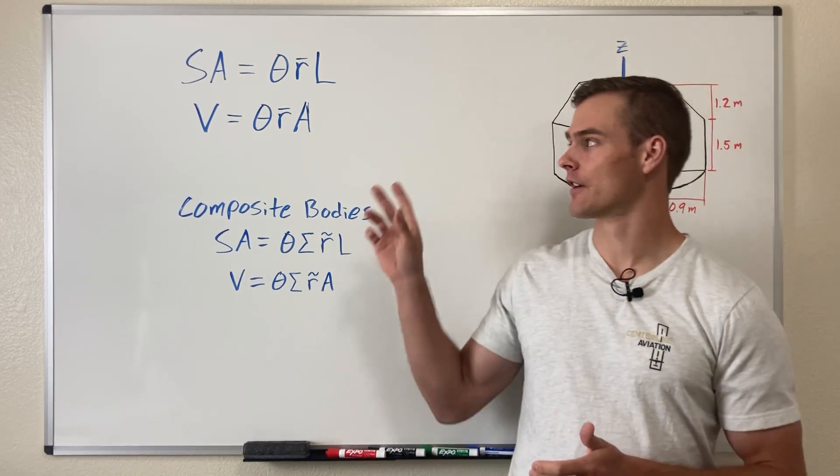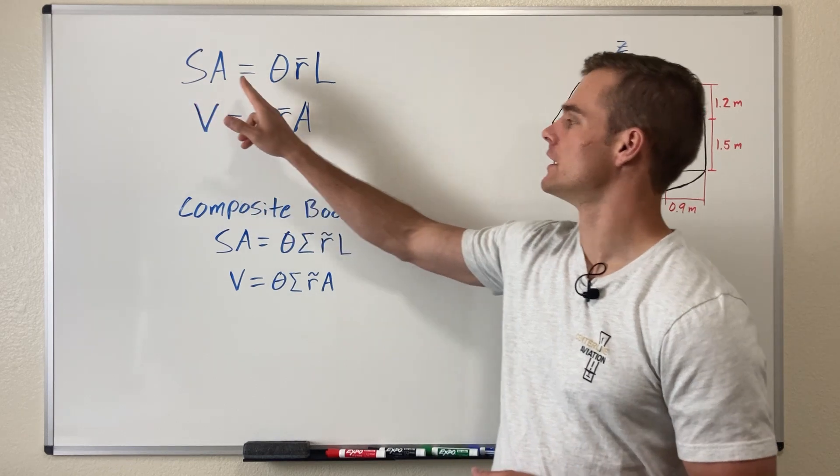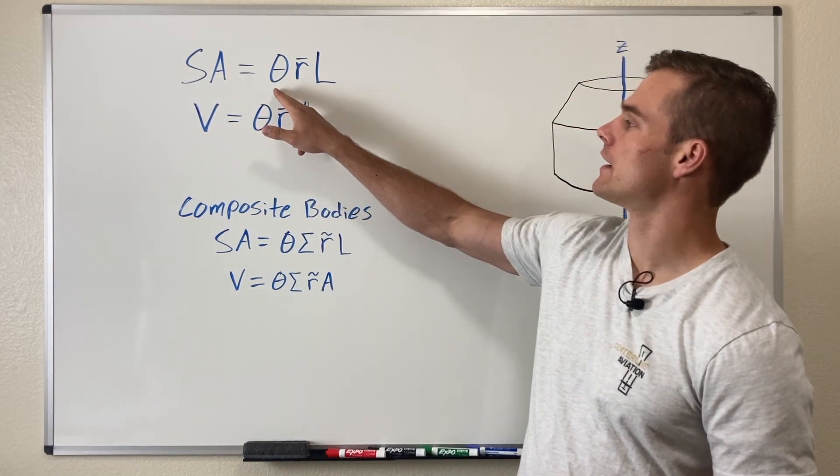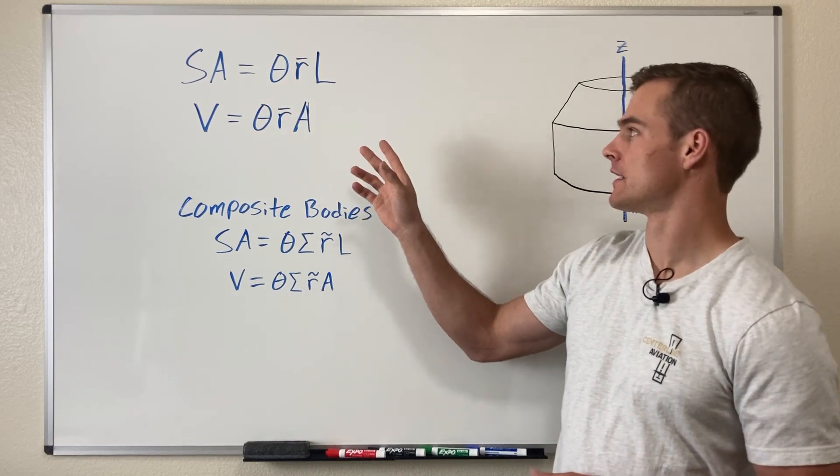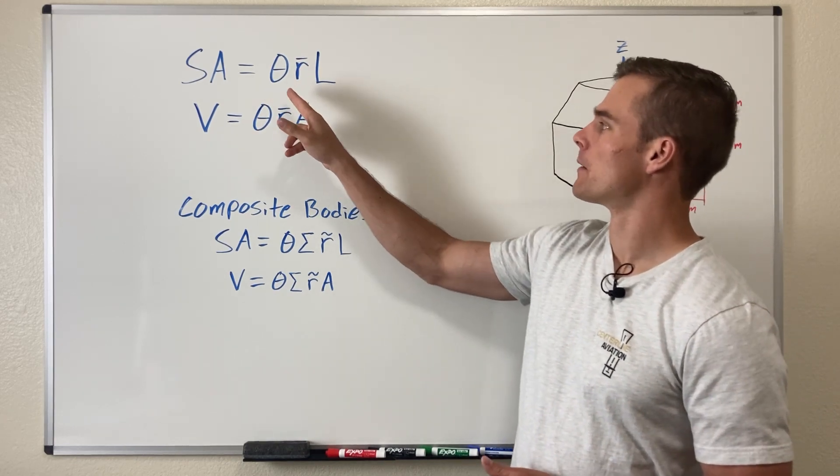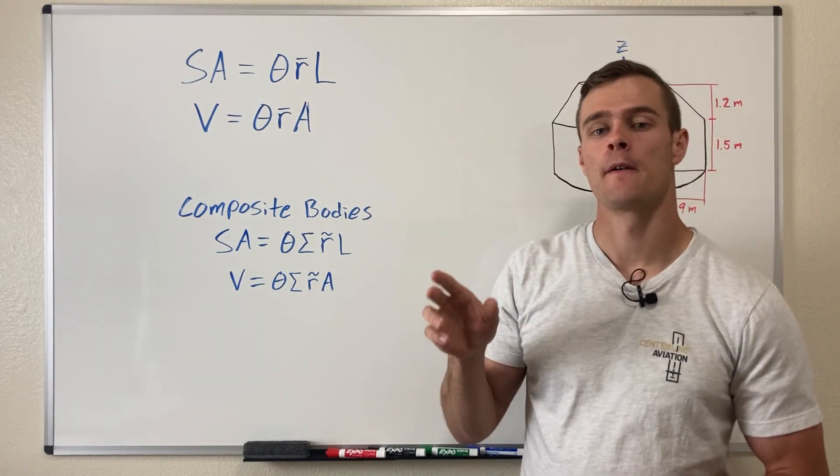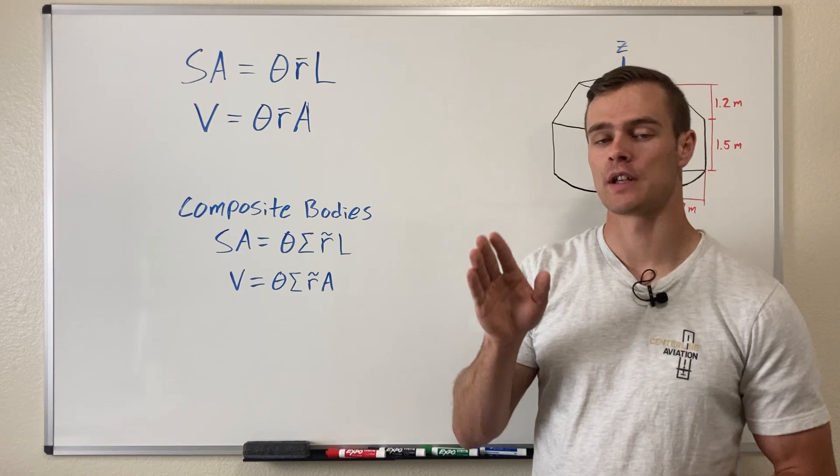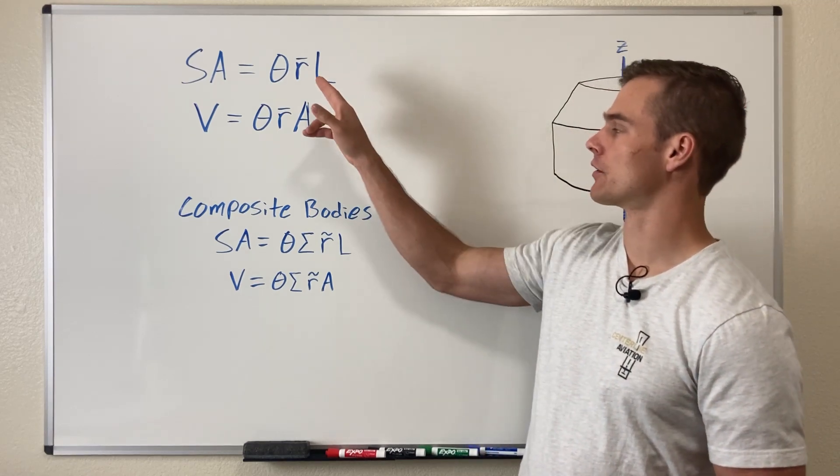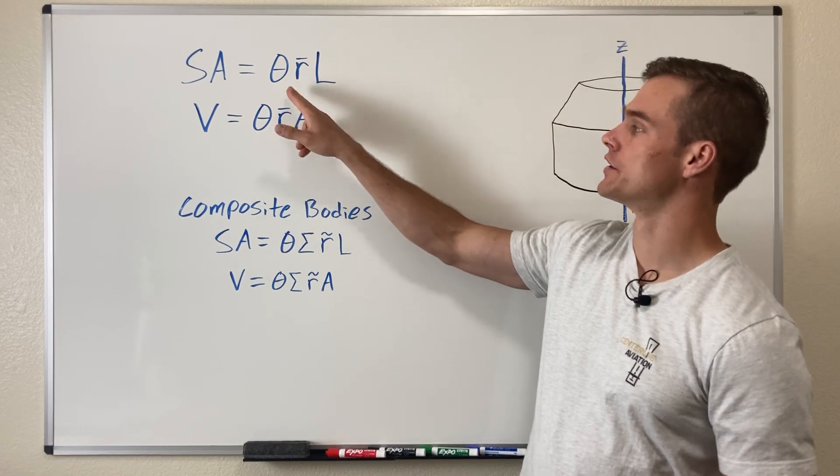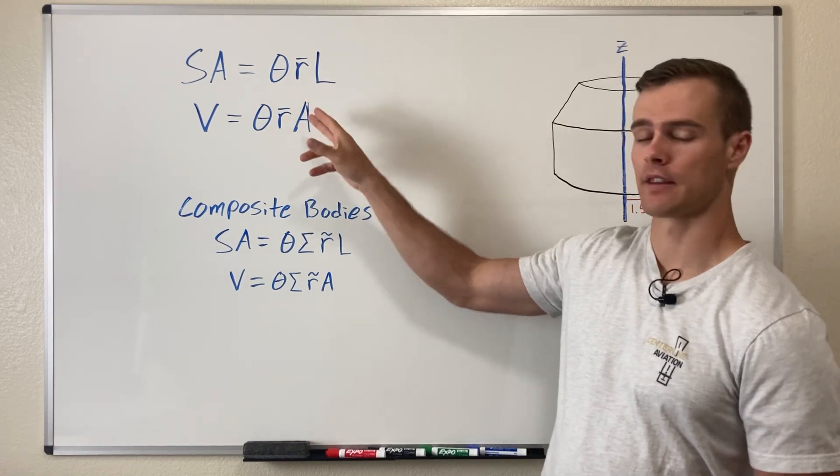These are their equations where we have that the surface area equals theta, which is the angle of rotation about an axis measured in radians, multiplied by R bar, which is the perpendicular distance from the axis of rotation to the centroid of the generating curve or line, and then L is the length of that line.